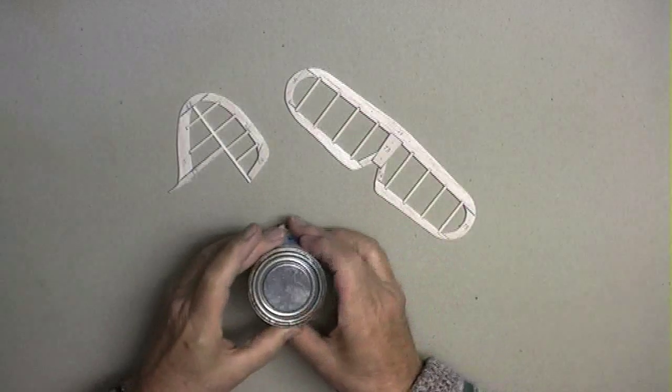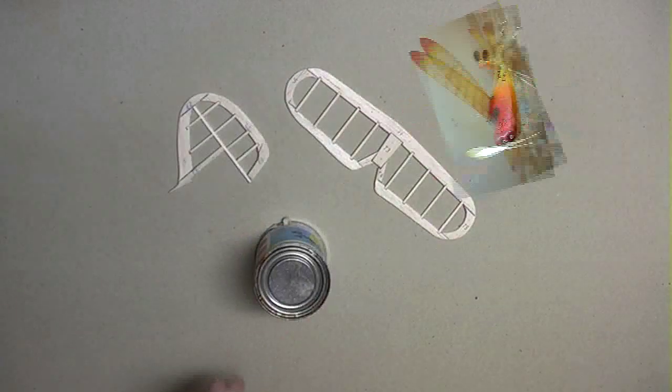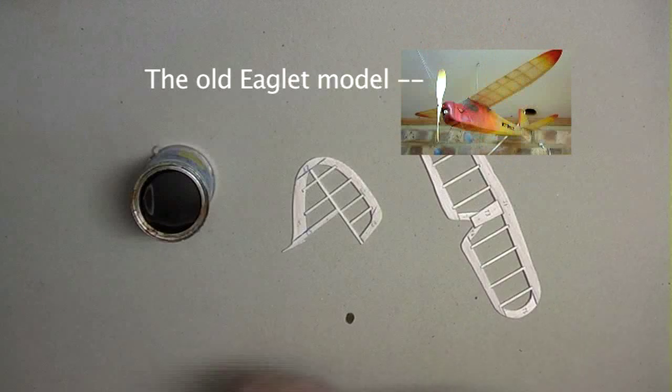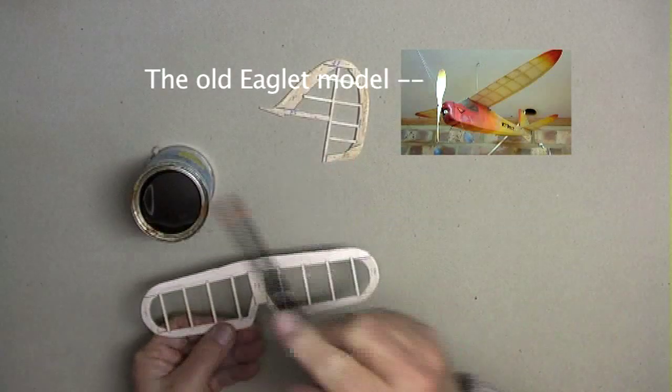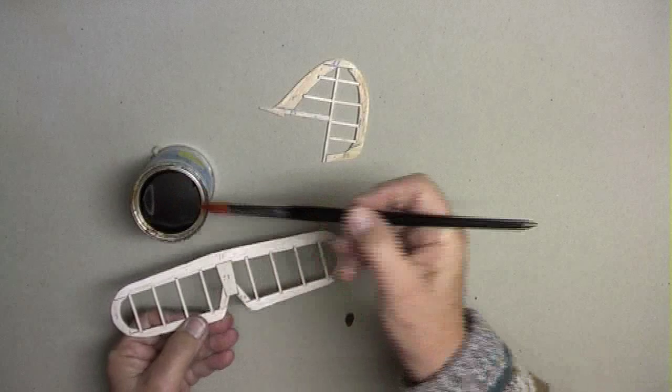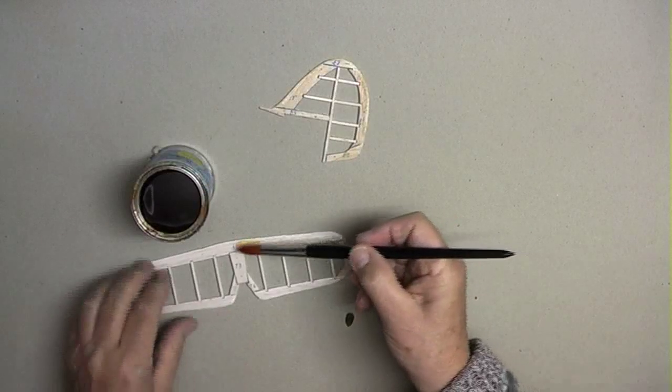Twenty years ago, Godfrey showed me a good way of covering the eaglet with tissue. First, the outer framework of the item to be covered was given a generous coat of clear dope.